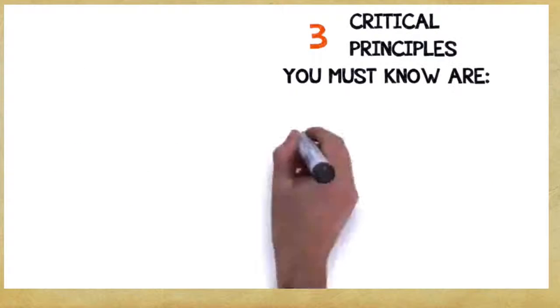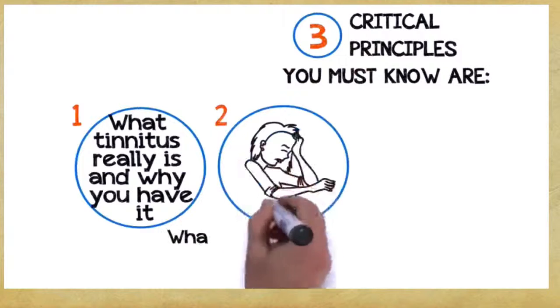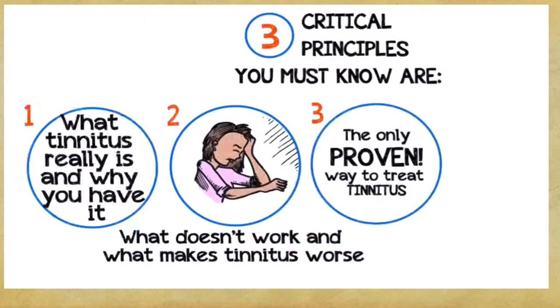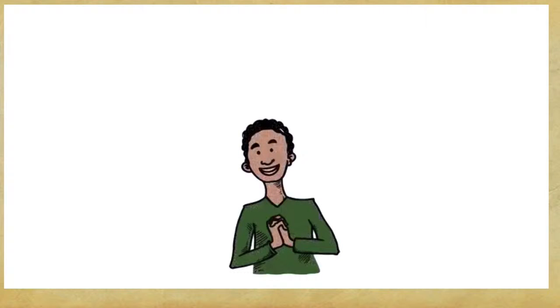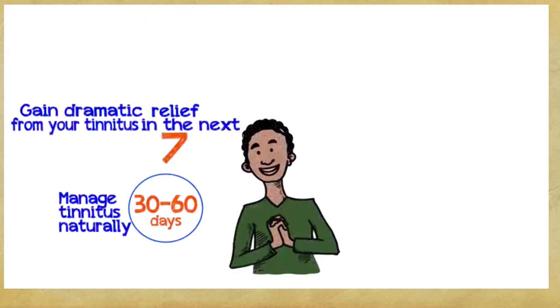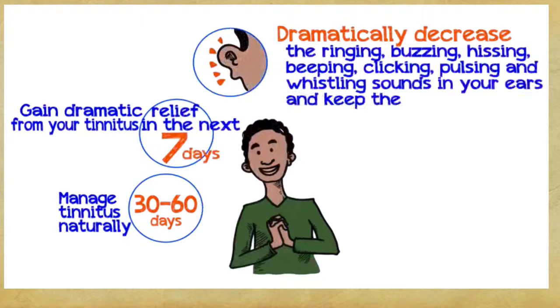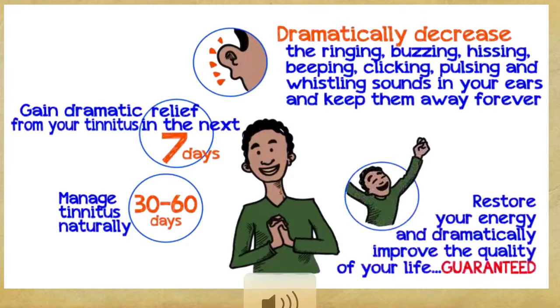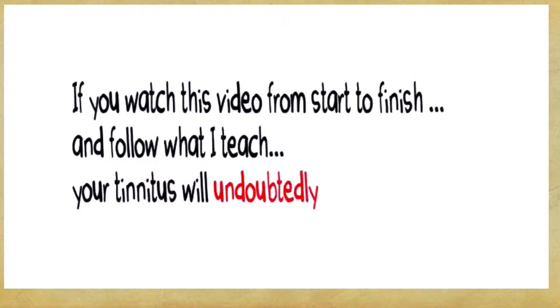There are three easy principles you must understand in order to achieve freedom from tinnitus and its related symptoms. The three critical principles are: one, what tinnitus really is and why you have it; two, what doesn't work and what makes tinnitus worse; three, the only proven way to treat tinnitus. You can manage tinnitus naturally within 30 to 60 days, gain dramatic relief within the next seven days, dramatically decrease the ringing, buzzing, hissing, beeping, clicking, pulsing, and whistling sounds in your ears. Your tinnitus will undoubtedly start to fade away.